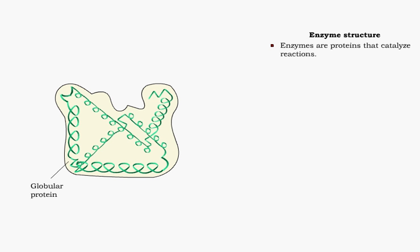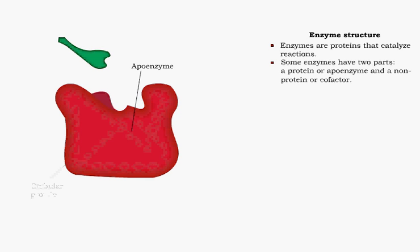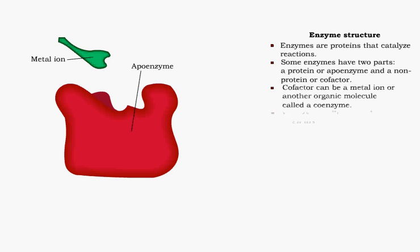Enzymes are special types of proteins that catalyze reactions. Some enzymes consist of two parts, the protein part called the apoenzyme and a non-protein part called the cofactor. The cofactor can be a metal ion or another organic molecule called a coenzyme. Vitamins are the raw material for many coenzymes.